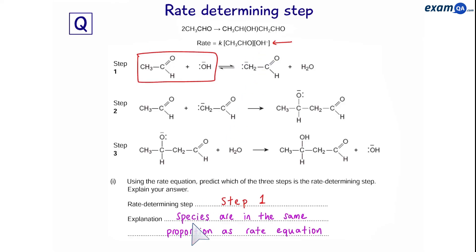Again, the explanation is as before. In step 1, the species are in the same proportion as the rate equation.